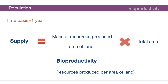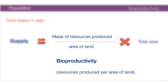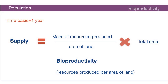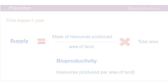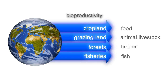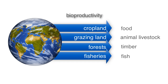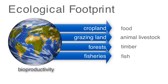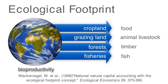The total supply of resources, in simple terms, equals the annual bioproductivity per land of bioproductive land times the area of that land. We must remember that different types of land produce different types of resources, and the bioproductivity will vary with the health of the land. Computing the annual carrying capacity of the whole earth can therefore be rather complex.